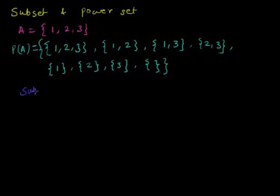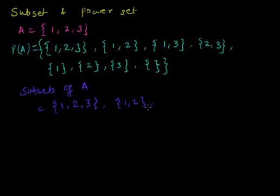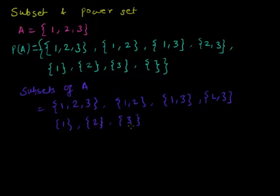The subsets of A are: {1, 2, 3}, then {1, 2}, then {1, 3}, then {2, 3}, then {1}, then {2}, then {3}, and the null set. These are all the subsets of the given set A, and the set which includes all of them is called the power set.